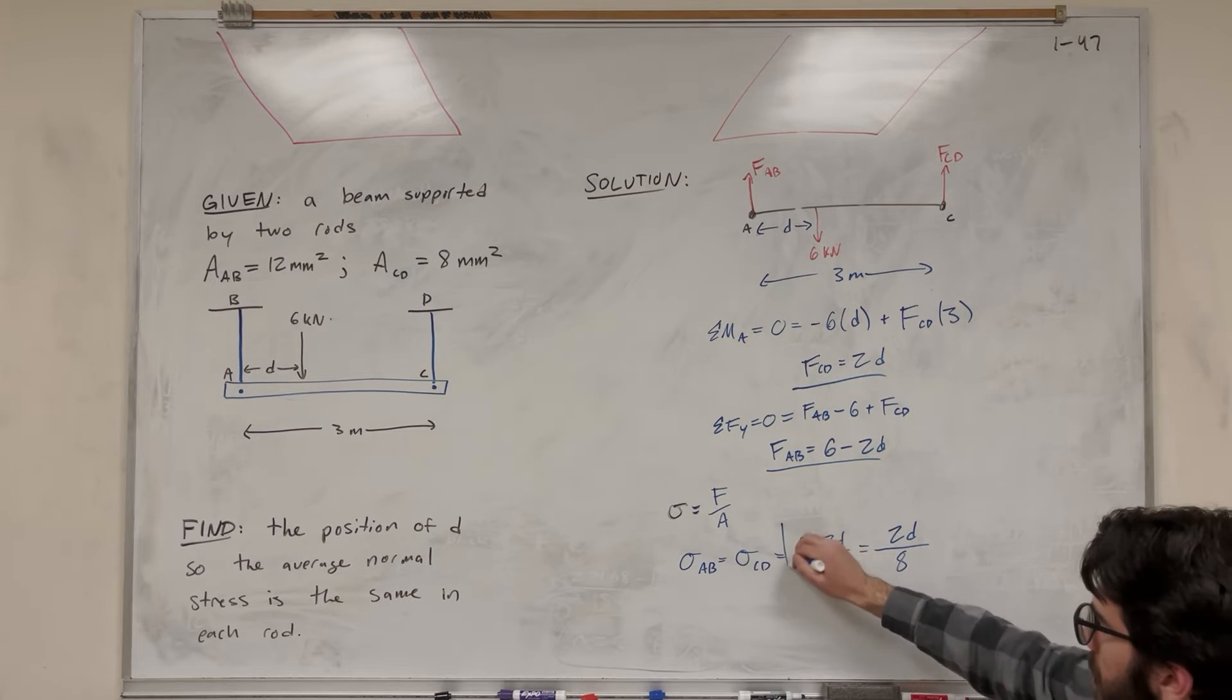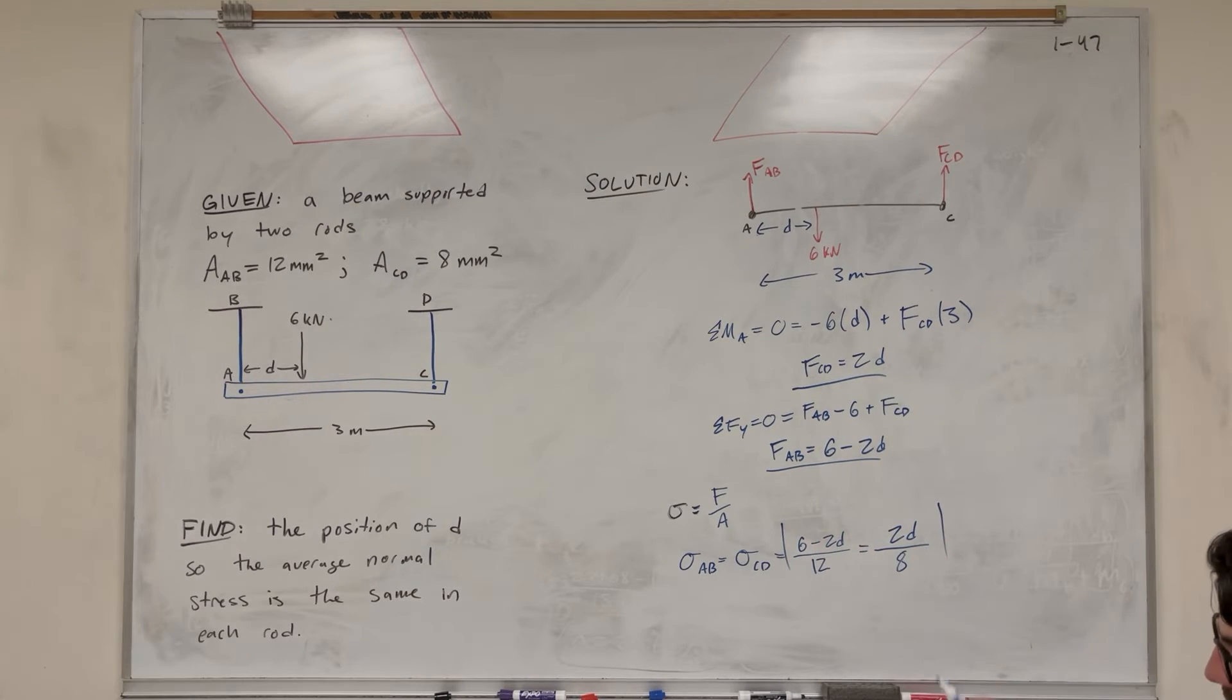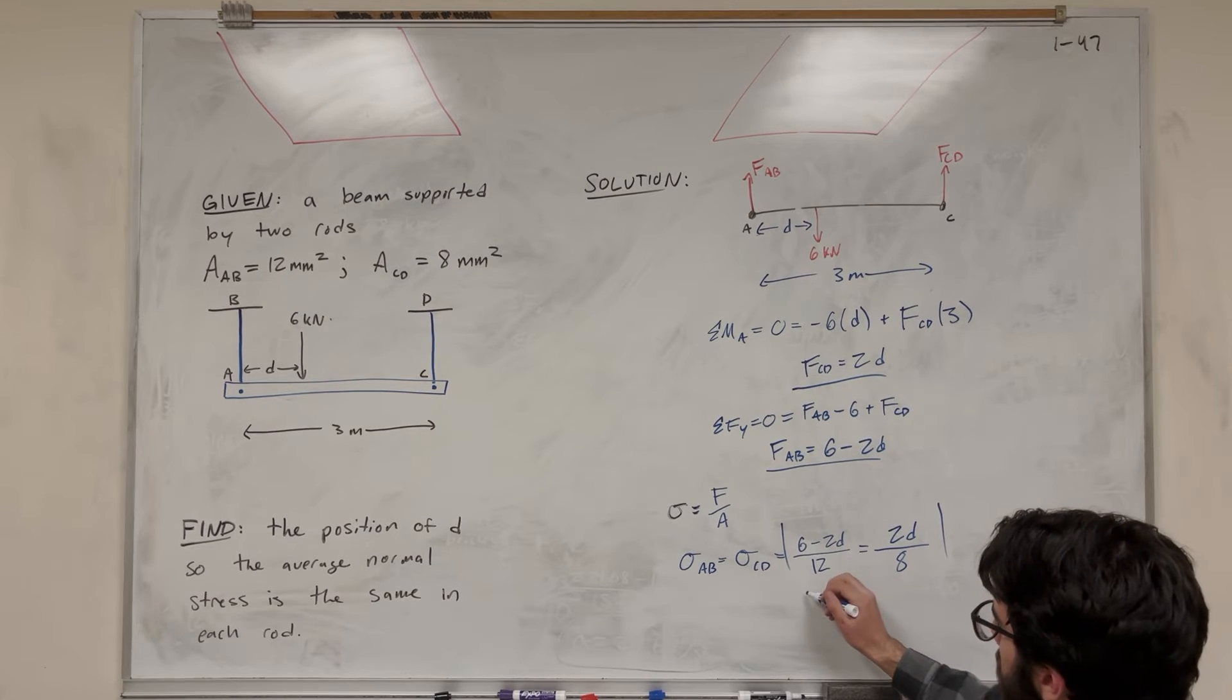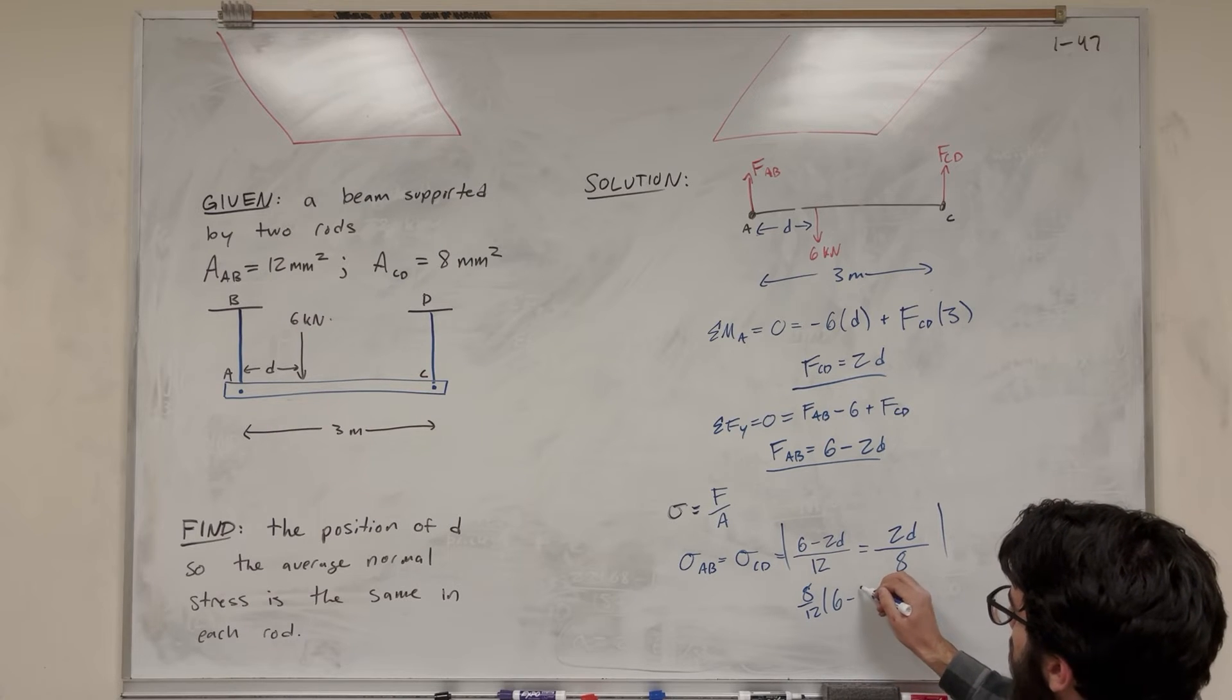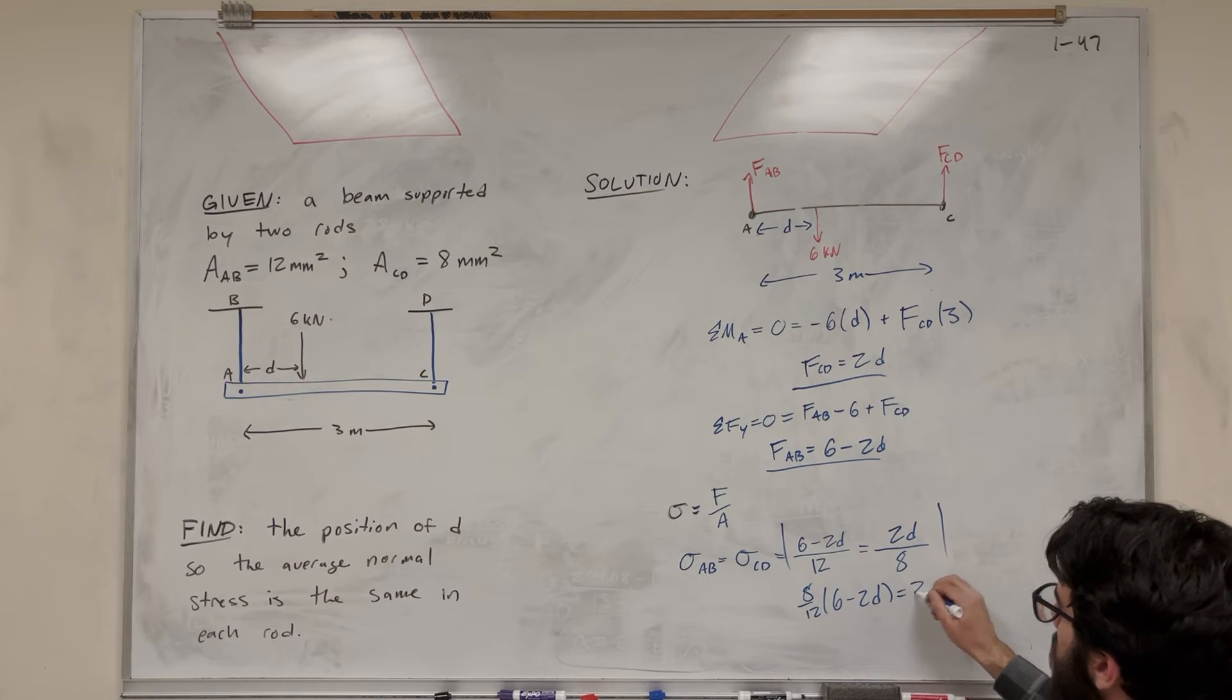So now we have one equation here. We're looking at just this equation, and it has one unknown. So how are we going to solve this? Well, let's multiply that 8 over. So we're going to get 8 over 12, 6 minus 2D is equal to 2D.